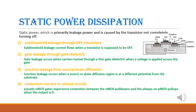Let us see static power dissipation in detail. Static power dissipation is mainly due to leakage power caused by a transistor which is not completely turned off. If the transistor is in a partial-on state, there will be static power dissipation. The first cause is sub-threshold leakage through off-transistors. After the threshold voltage only should the transistor switch on, but before the threshold voltage is reached there will be some leakage — called sub-threshold leakage through off-transistors.